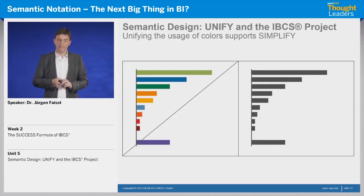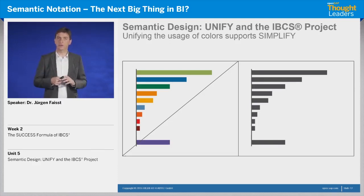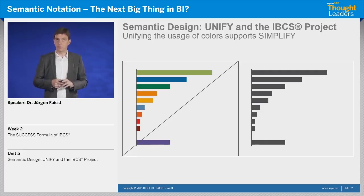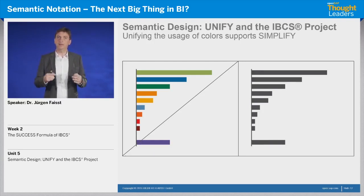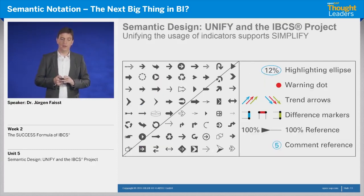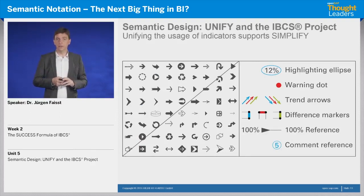Let's come to SIMPLIFY. If we have a concept for the usage of colors — so if in our notation manual we have a consistently defined usage of colors — then you won't have any colored charts anymore unless the color supports meaning. For example, if my company is always colored in blue and others in gray, that might be perfect, but it should have meaning. Color should convey meaning, and this has to be defined in the notation manual. The same goes for indicators: if every report designer uses their own indicators to highlight things, you won't understand it. Define it in the notation manual and it will be much simpler.